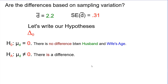Are the differences we found based on sampling variation? We found an average difference of 2.5 years where the sampling distribution model standard error was 0.31. Zero is really many standard deviations away from that value, giving us a very low P-value. So let's write our hypothesis. Delta-naught is the hypothesized difference — we assume there was no difference between husband and wife's ages, so the mean difference mu equals zero. For the alternative, we'll do a two-sided test. We're probably pretty sure it's going to be husbands older than wives, but we'll do two-sided.